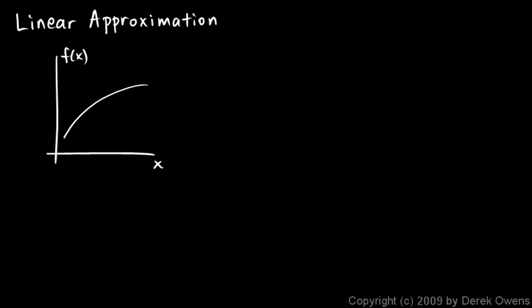Now we'll talk about linear approximation. Here's the idea: if we have a curve in the plane — some function of x — and you have some x value, and you have a tangent line to the curve at that x value, the tangent line is a very good approximation to the curve itself if you're close to that x value. As we get farther away, the curve and the tangent line deviate, but close to this x value they are very close together.